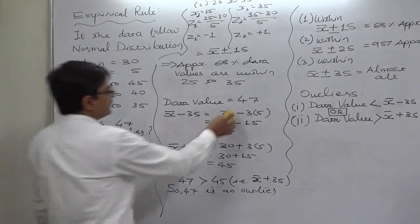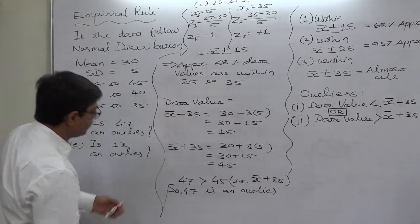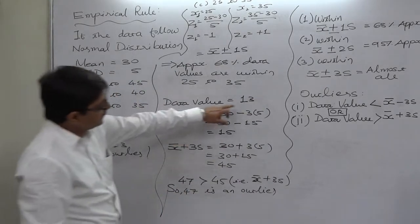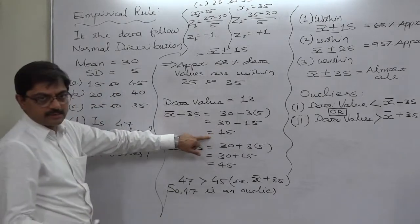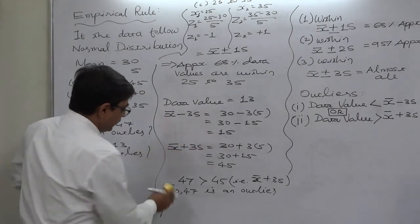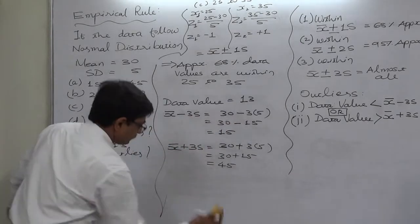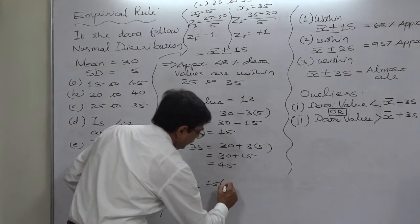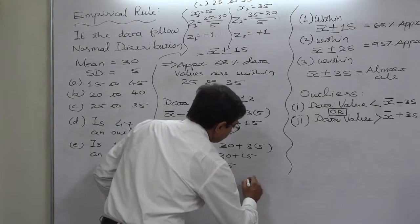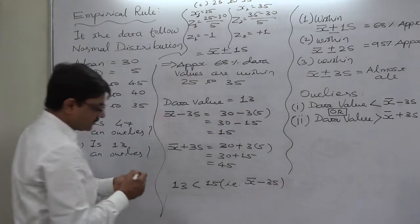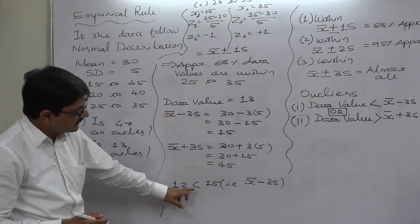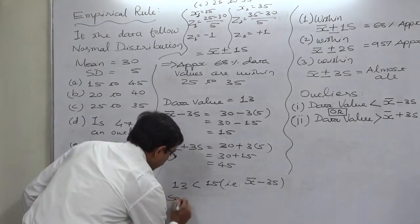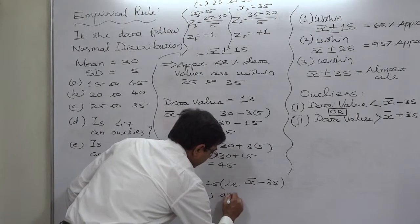Now, is the data value 13 an outlier? We can see that 13 is less than the lower limit of 15. Since 15 represents x̄ − 3 standard deviations, and any data value less than x̄ − 3 standard deviations is called an outlier, 13 is indeed an outlier.